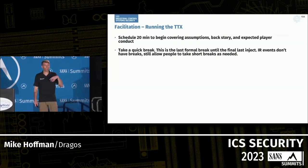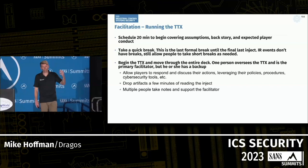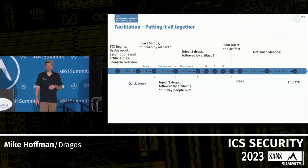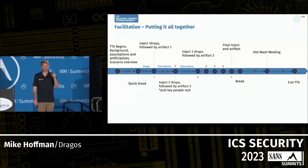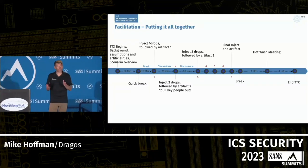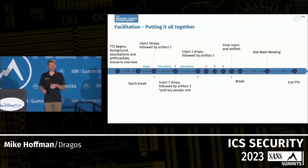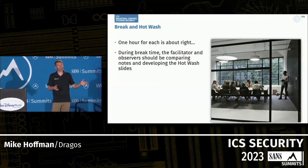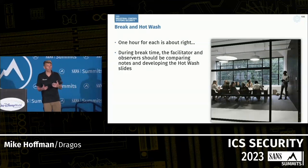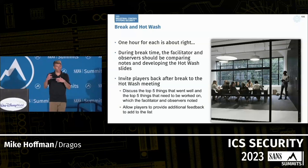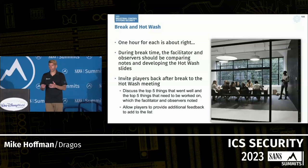When running the tabletop, I like to schedule a 20-minute backstory at the beginning, take a quick break, then move through each inject — dropping injects, presenting artifacts, moving forward. After the final inject, you have a hot wash meeting: about an hour where you discuss the top five things that went well and the bottom five things to be improved, then adjourn. The break also helps the facilitator and note-takers put together what went right or wrong before the hot wash discussion.